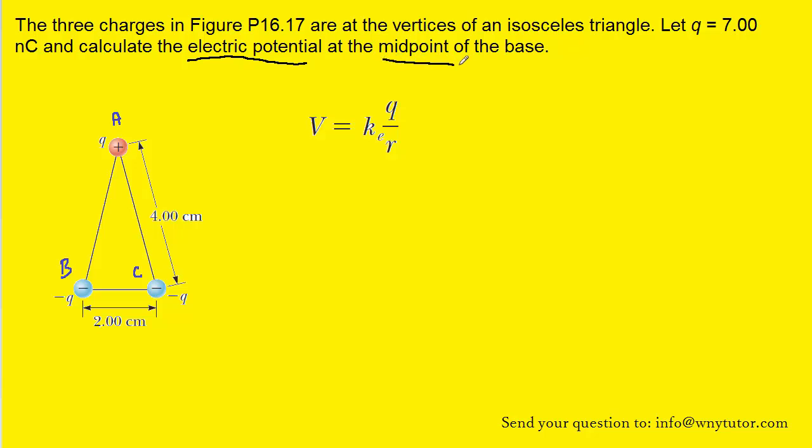Now that location in this question is the midpoint of the base. So basically we're trying to calculate the electric potential at this location right here. Maybe we could just mark it with an X. So that would mean that the distance from charge B to that location would simply be half of the two centimeters that's marked on the figure. So that would be one centimeter.